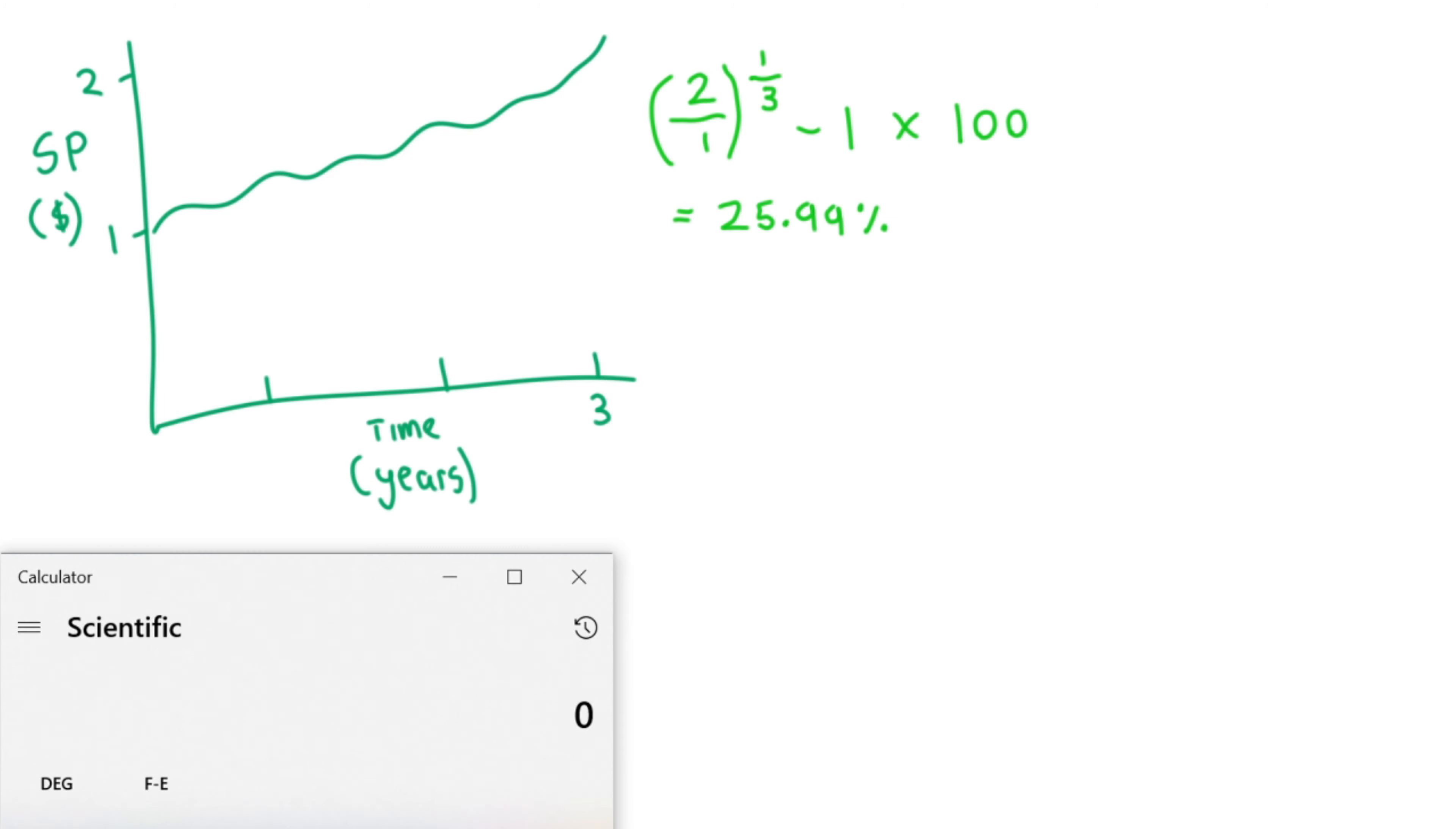Let's try to prove that by getting our starting value of $1 and multiplying it by 1.2599 three times, or in other words, for three years. And ignoring the rounding error, we find this to be true.